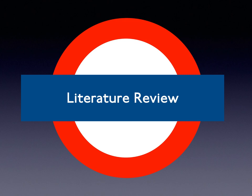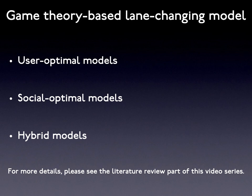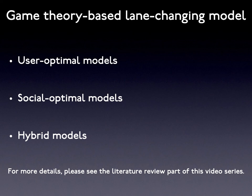To investigate the impacts, we usually need models to figure them out. Here we apply game theory as our framework. Based on the priority of the client itself or the society, a new categorization system of game theory-based lane-changing models is created, including user optimal models that promote the driver's own benefit only, social optimal models that maximize the total welfare of the society, and hybrid user and social optimized models that balance user experience and system efficiency. For more details, please see the literature review part of this video series.